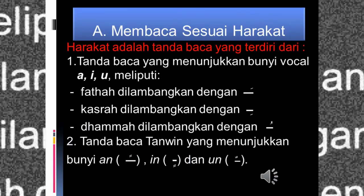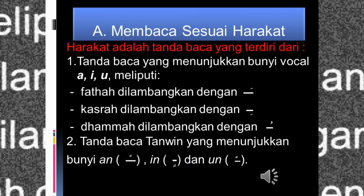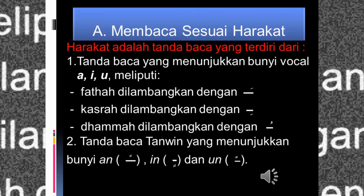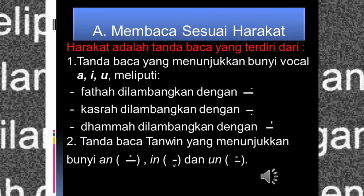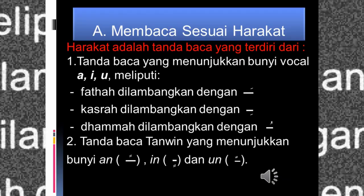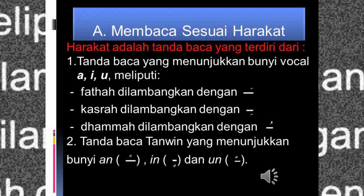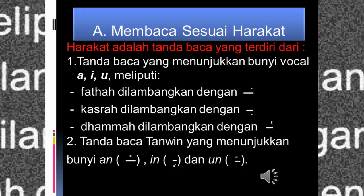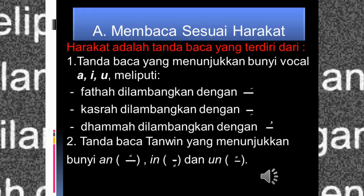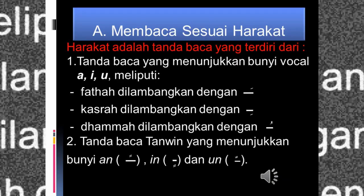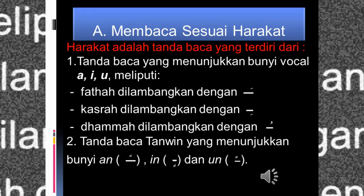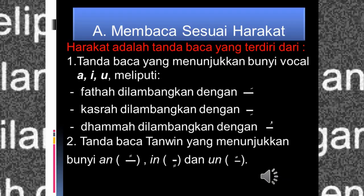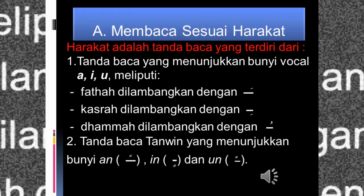Yang pertama, membaca sesuai harokat. Harokat adalah tanda baca yang terdiri dari tanda baca yang menunjukkan bunyi vokal A, I, U. Yang meliputi: fathah dilambangkan dengan tanda satu garis di atas, kasroh dilambangkan dengan garis satu di bawah, dan dammah dilambangkan seperti tanda koma di atas.